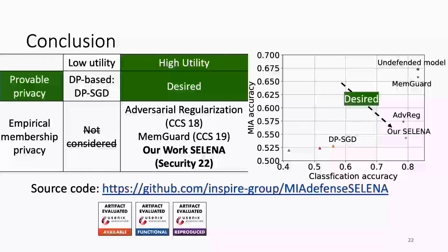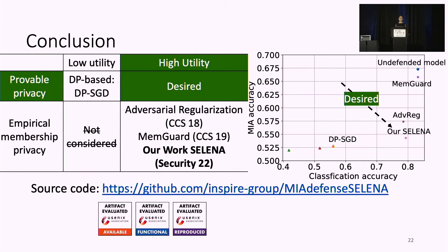In this work, we propose a new membership inference defense called Senena, consisting of Splitter-I and self-distillation. Our defense lies in the category of membership defenses with improved membership privacy and high utility. As shown by the red plot — where the x-axis is classification accuracy (higher is better) and the y-axis is membership attack accuracy (lower is better) — our defense achieves a better utility-membership privacy trade-off compared to previous defenses. We hope our work provides insights on membership privacy, either on improving utility for DP-based approaches or providing more formal guarantees for our defense without losing utility. Feel free to check the artifact on our GitHub page.